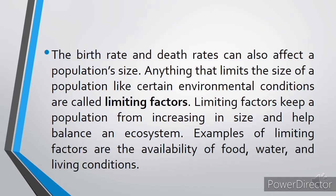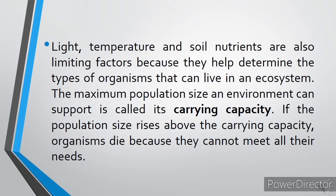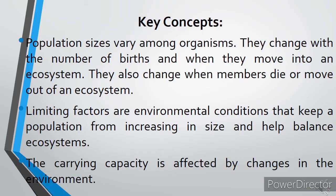Examples of limiting factors are the availability of food, water, and living conditions. Light, temperature, and soil nutrients are also limiting factors because they help determine the types of organisms that can live in an ecosystem. The maximum population size an environment can support is called its carrying capacity. If the population size rises above the carrying capacity, organisms die because they cannot meet all their needs. Population sizes change with births and when organisms move into or out of an ecosystem. The carrying capacity is affected by changes in the environment.